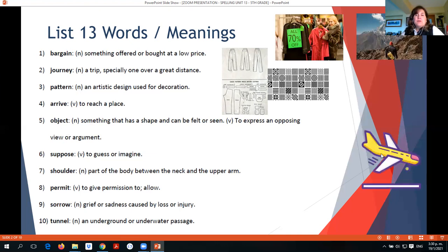Arrive. Arrive is to reach a place, like when a plane arrives. Object is something that has a shape and can be felt or seen if we use it as a noun. But if we pronounce it object, it's a verb and it's an expression of opposing view or argument. To object is like when you see lawyers in a court saying, I object. Well, that's to express that they are not in agreement with something.